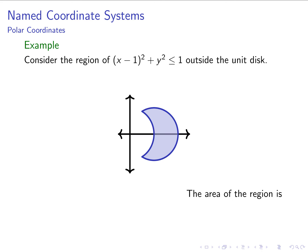Here we have a more complicated region: the part of (x−1)² + y² ≤ 1 that is outside of the unit disk. The equation (x−1)² + y² ≤ 1 describes a circle centered at (1, 0) with radius 1, so we want everything in that circle that is also outside the unit circle — a moon-shaped region.